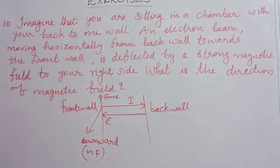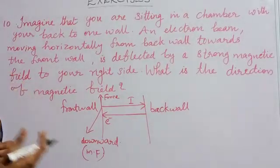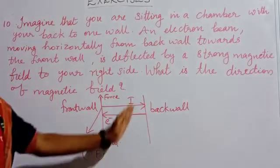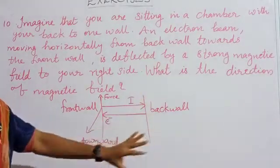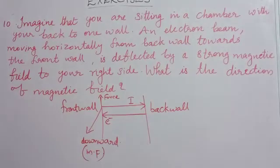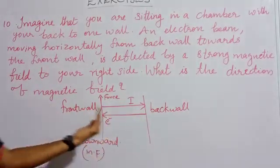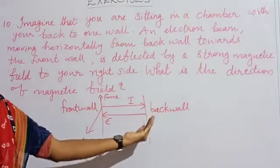Here it is telling that you are sitting in a chamber with your back to one board. So, I have drawn here a back board. This is the front board. Now, an electron beam moves horizontally from back board to front board.